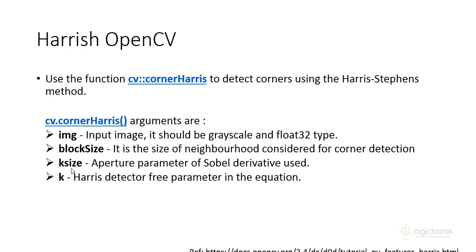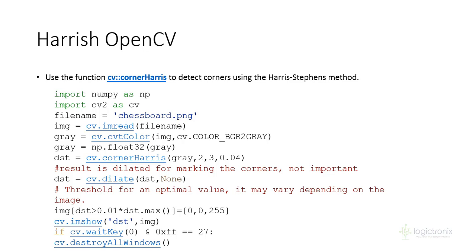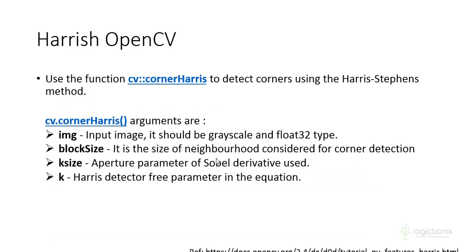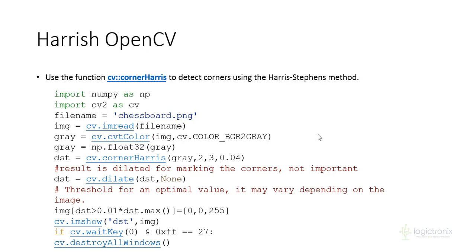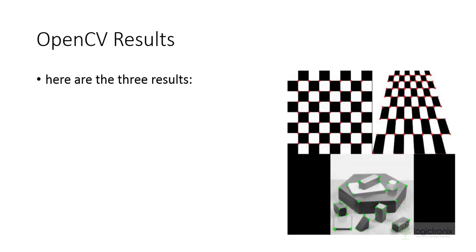Here we have an example of Harris Corner using OpenCV. The image is loaded into the img variable and grayscale conversion is performed. Then cv2.cornerHarris is applied — the grayscale image is taken as input along with the block size and ksize parameters as discussed. Finally, the Harris response is dilated and provided to the output image. This is the OpenCV implementation and we can see the OpenCV results, which are taken from the wiki.